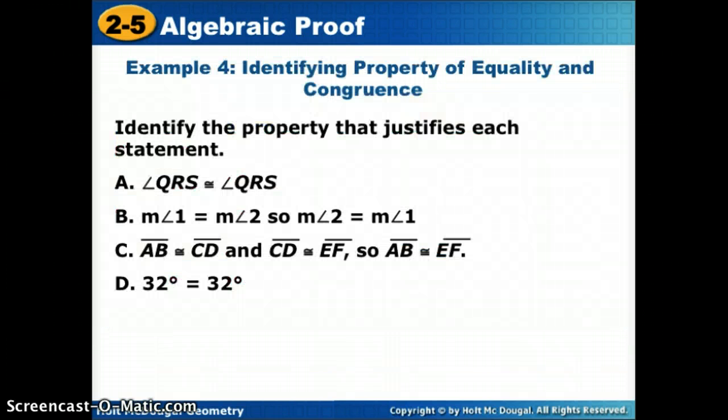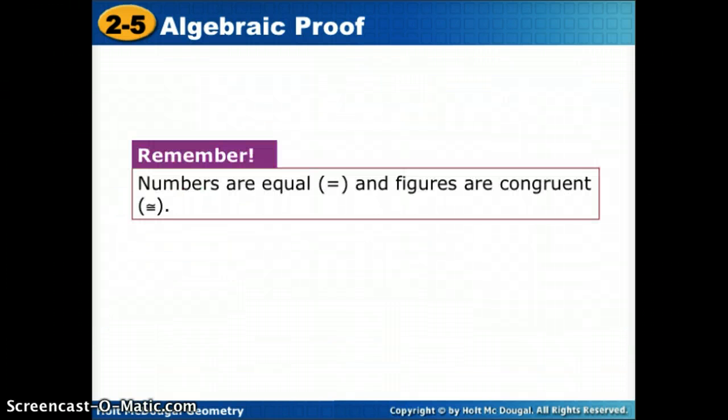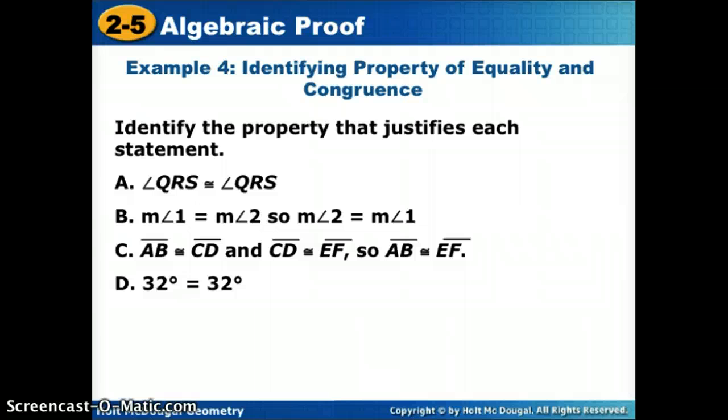So remember, when we talk about numbers or actual measures, we talk about equal. When we talk about the figures themselves, we use congruent. So we're going to do some of this practice in class, but real quick, so you can practice as well, let's see if we can practice identifying the property that is being shown in each statement. So if I said angle QRS is congruent to angle QRS, and we want to know, well, what property am I using? Well, I need to notice that the left side is the exact same on the right side. So if this angle were looking at itself in the mirror, it would see itself. So that one is the reflexive property of congruence.